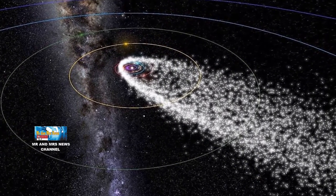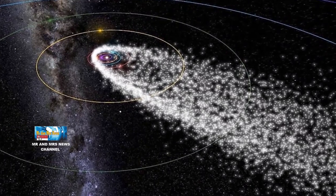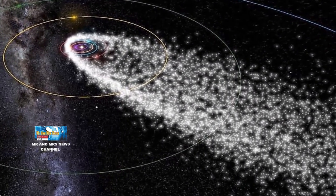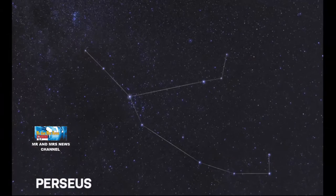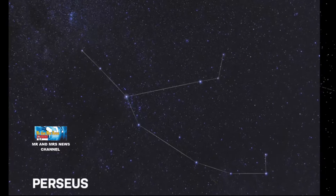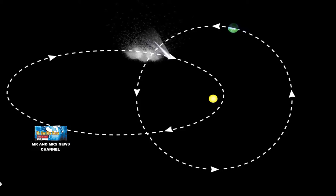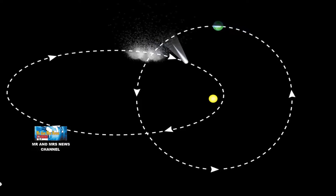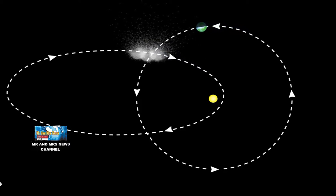Perseid adalah fenomena alam berupa hujan meteor yang sering dikaitkan dengan Komet Swift-Tuttle. Perseid dinamakan demikian karena titik radiant hujan meteor ini seolah-olah berasal dari arah rasi bintang Perseus. Meteor-meteor Perseid tersebut berasal dari serpihan debu ekor Komet Swift-Tuttle yang masuk ke atmosfer bumi.